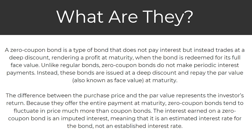So to start with, what are they? A zero coupon bond is a type of bond that does not pay interest but instead trades at a deep discount, rendering profit at maturity when the bond is redeemed for its full face value. Unlike regular bonds, zero coupon bonds do not make periodic interest payments. Instead, these bonds are issued at a deep discount and repay the par value, also known as face value, at maturity. The difference between the purchase price and the par value represents the investor's return.